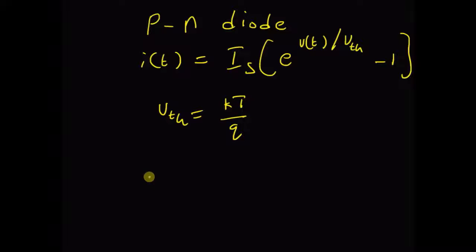We want to verify this relation numerically. So, by using the values Is equal to 10 power minus 4 amperes and constant Vth equal to 26 millivolts, we can plot the input and the output for this PN diode.